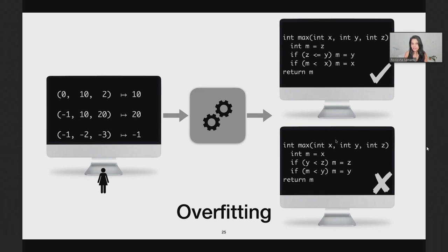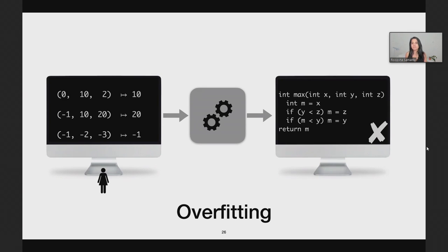The problem with overfitting is that because some programs may satisfy the implicit specifications and others may not, the synthesizer could very well output a program that is consistent with the examples but overfits and does not generalize.